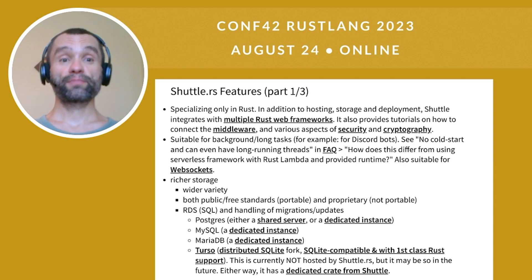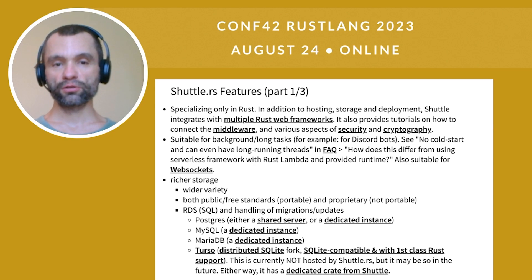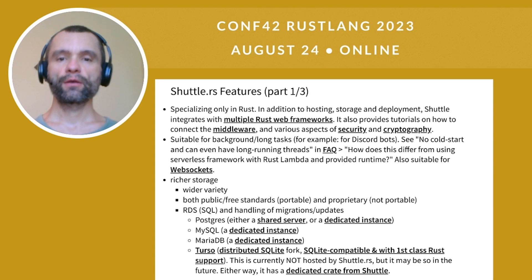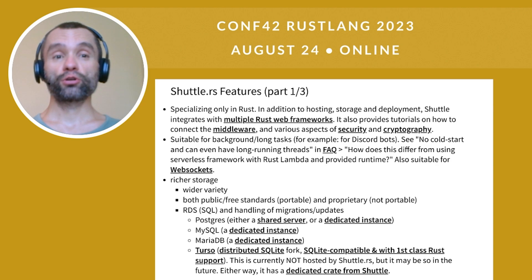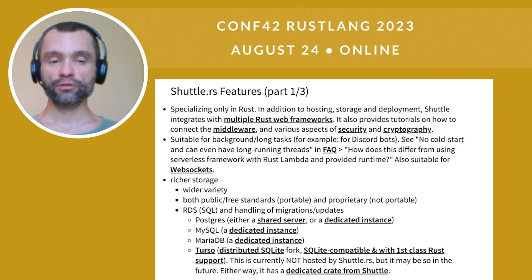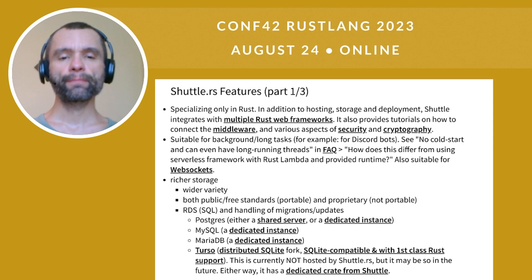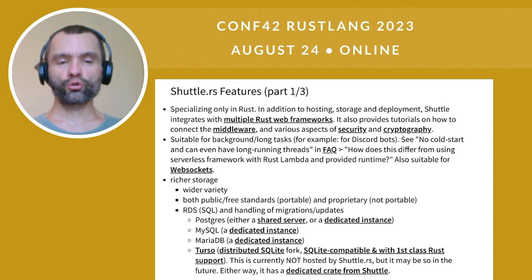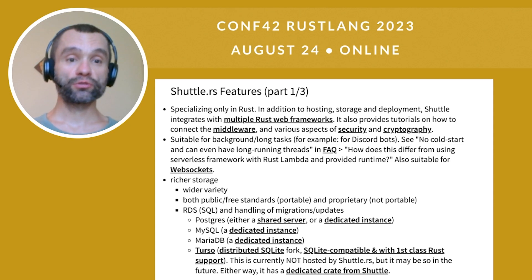Let's look at Shuttle.rs. Shuttle.rs specializes in Rust and it's top-class — the tutorials are well written and it also documents how to connect middleware, security, and cryptography features. The applications deployed on Shuttle are suitable for background or long-running tasks. It provides a much richer storage: there are four SQL options — PostgreSQL, MySQL, and MariaDB as dedicated instances — and PostgreSQL also has a shared server from Shuttle, as well as Turso, which is a distributed SQLite fork.